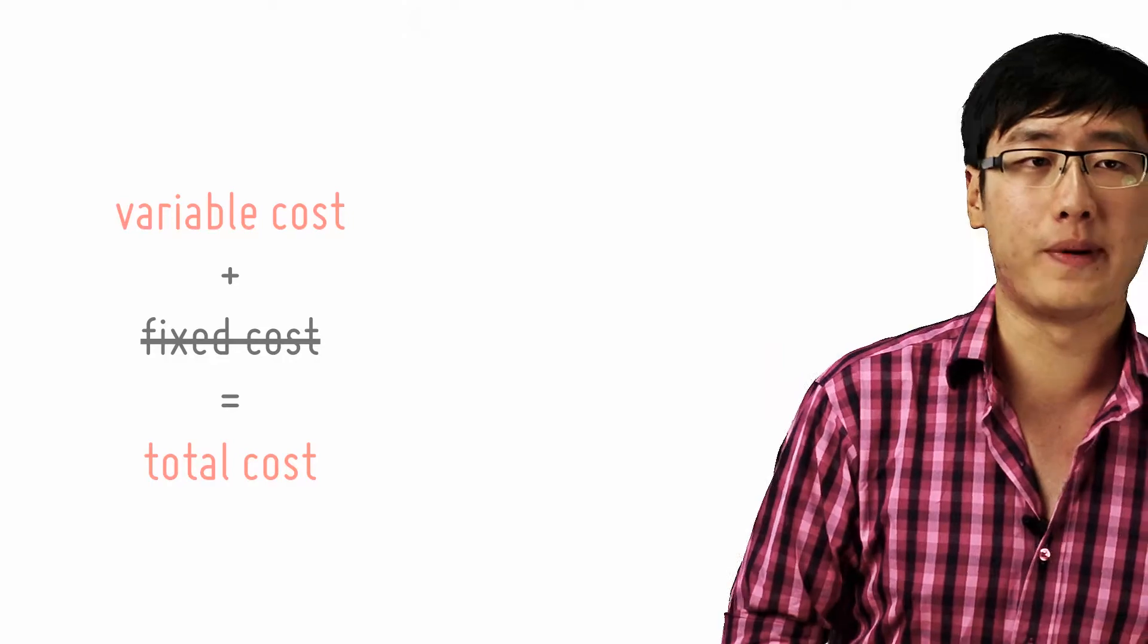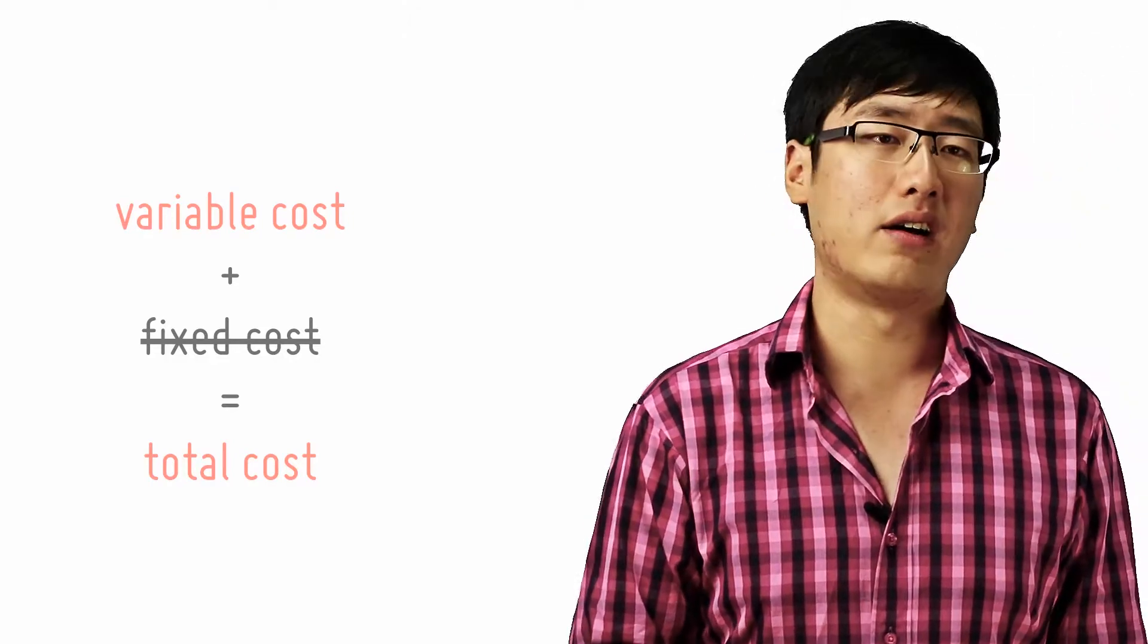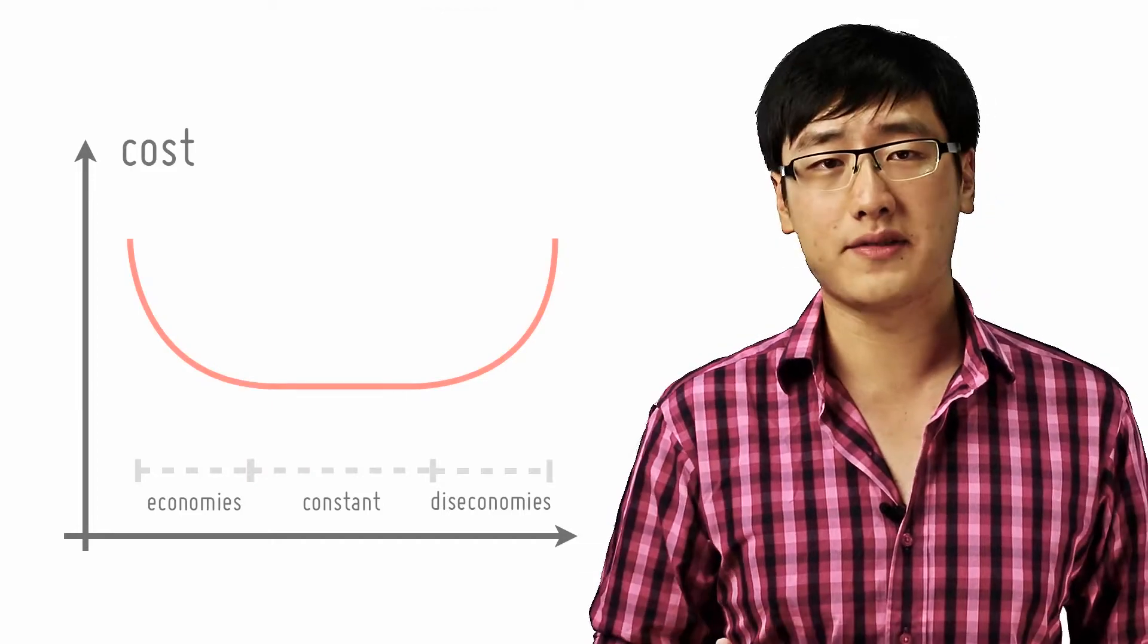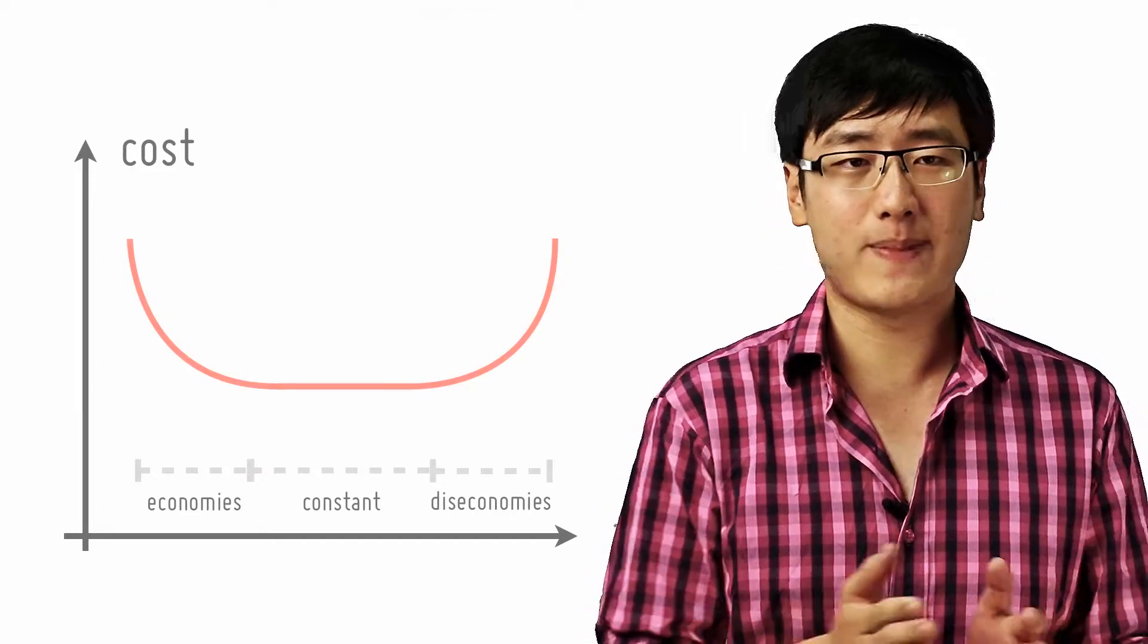And that's a downward sloping long-run average cost curve or the LRAC curve. Why is that so? Because when you face economies of scale, you can produce, when you expand your firm, let's say,